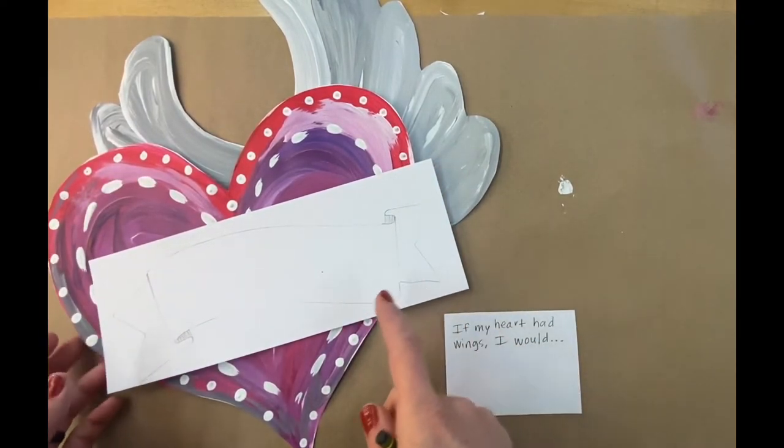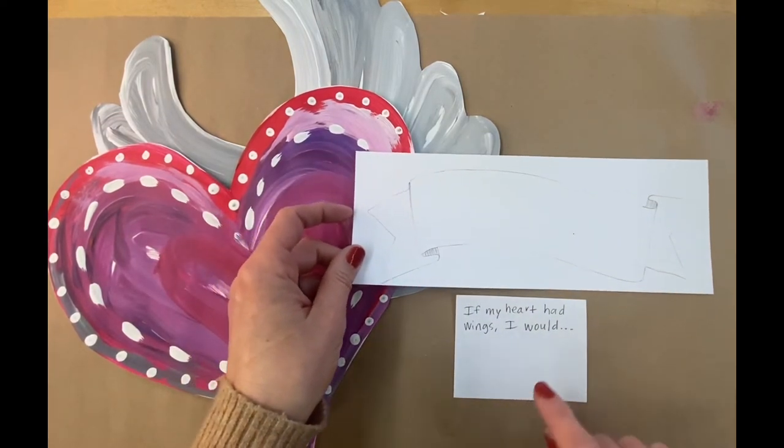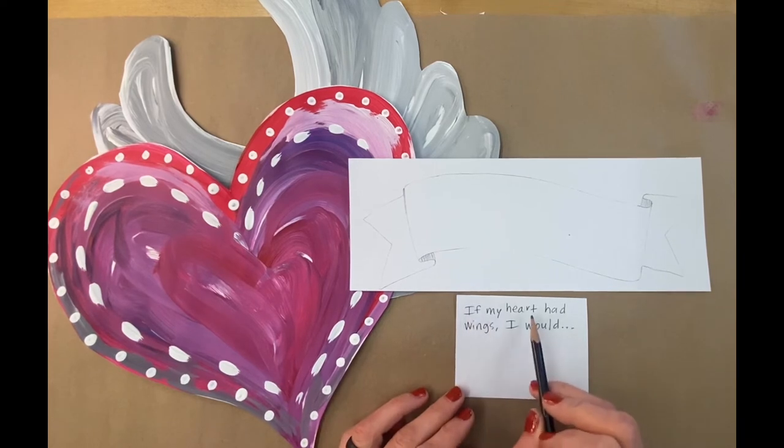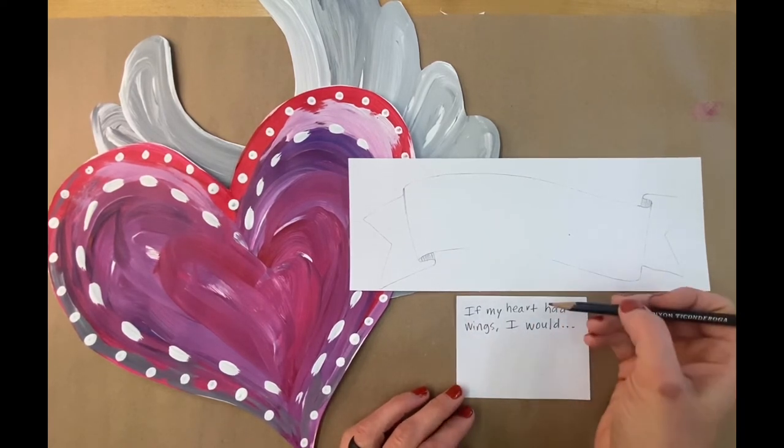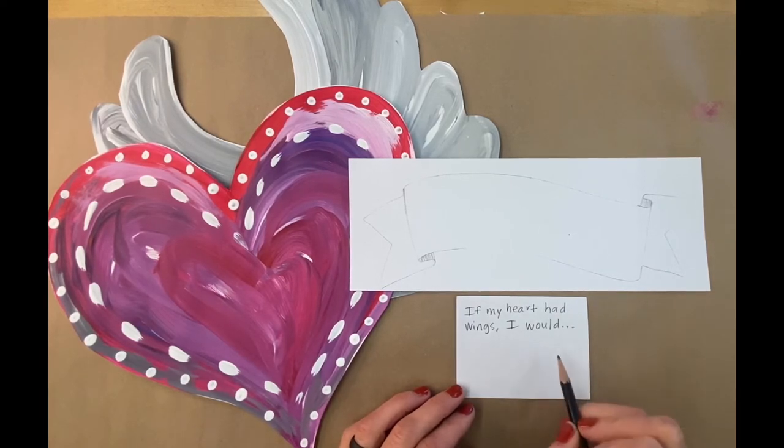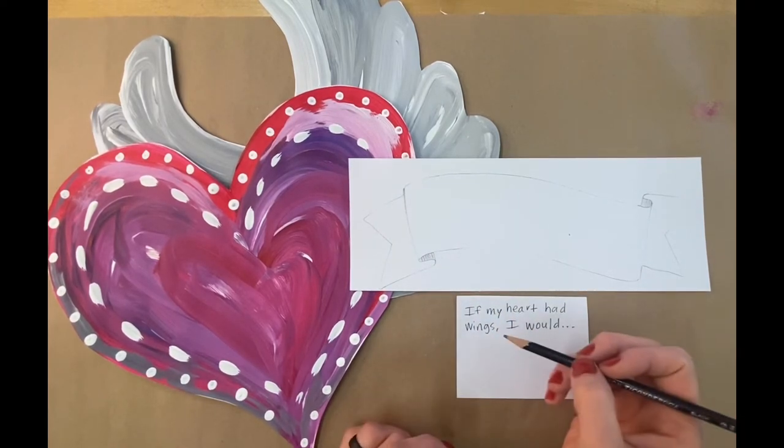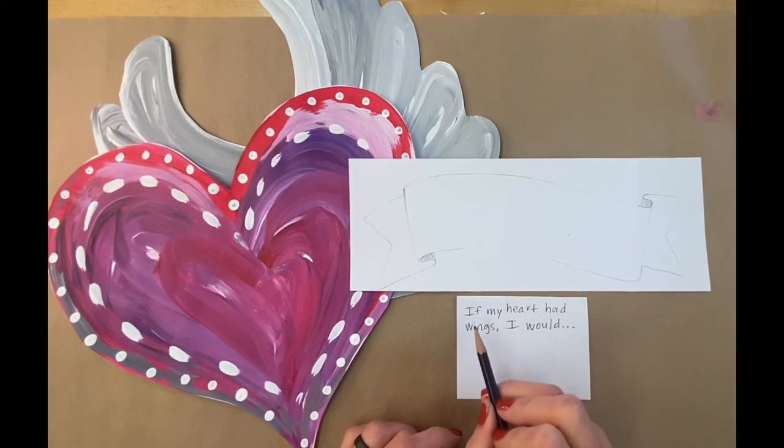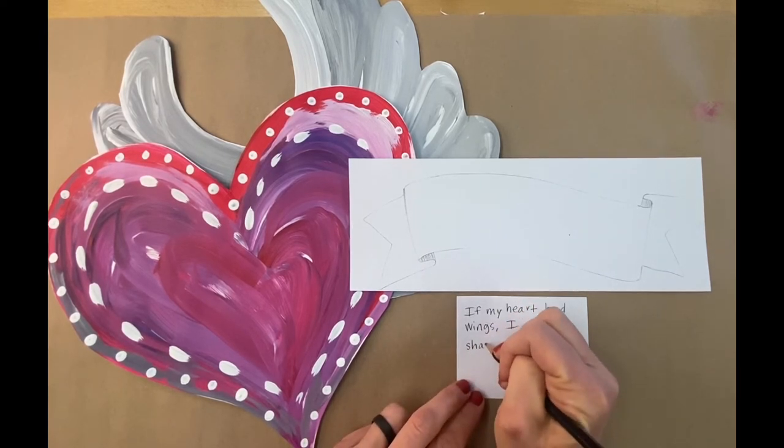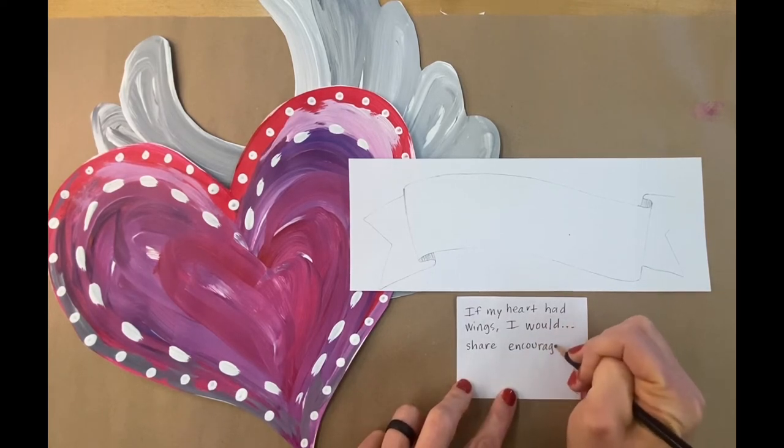This is a sentence stem that you might want to start with. It says, 'If my heart had wings, I would...' and we're going to write down our thoughts first on a little piece of paper and just double-check our spelling, and then we're going to use our best handwriting to write it here. So when I thought about this, I would share encouragement with people who need it.